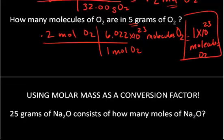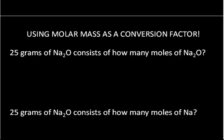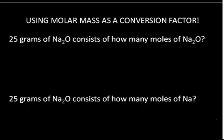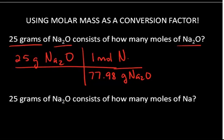It's very easy to use the molar mass as a conversion factor, and that's what's done regularly in chemistry. Since we can't count molecules, compounds, or atoms directly, we have to weigh them — so we're constantly converting between weight and number. Here's another one: if you have 25 grams of sodium oxide, how many moles of sodium oxide do you have? You start with what's given — 25 grams of sodium oxide — and from the periodic table we calculate the molar mass of sodium oxide: 77.98 grams per 1 mole of sodium oxide.